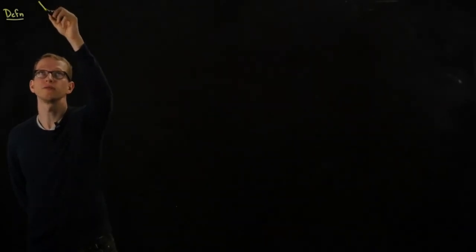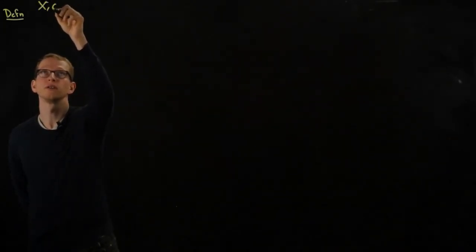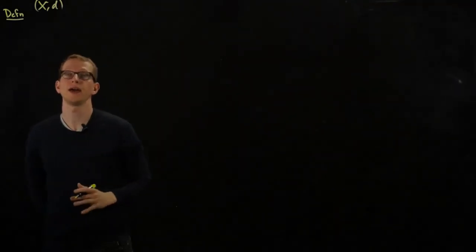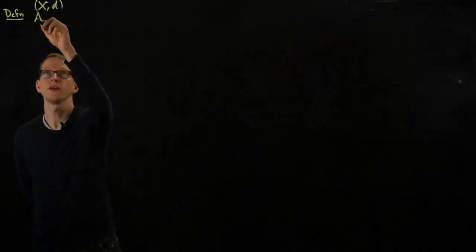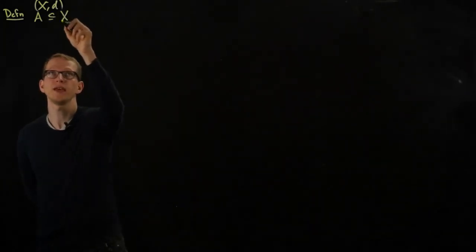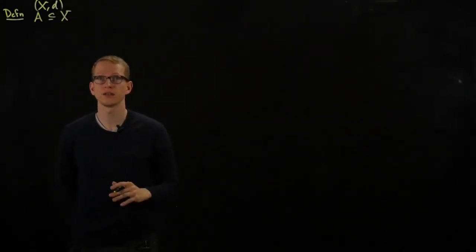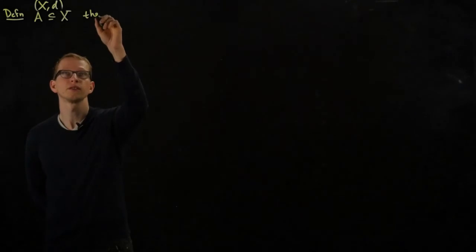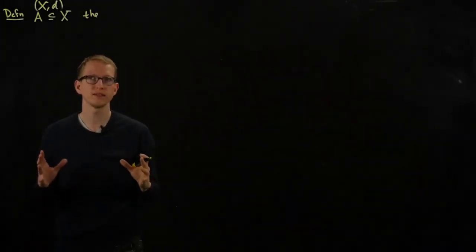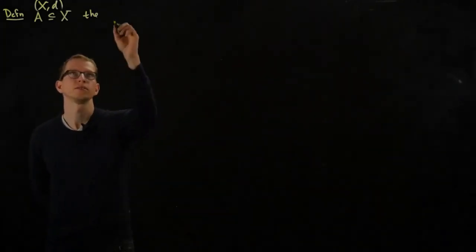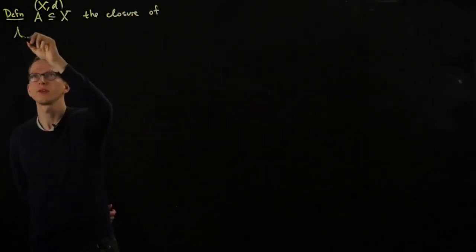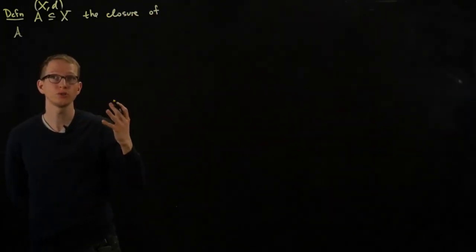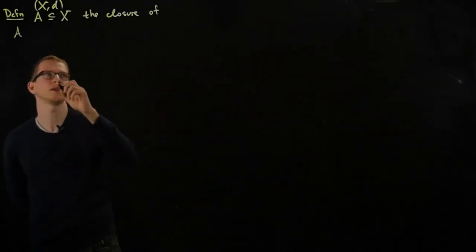So again, for all of this video, x,d is a metric space. If I have a subset A of x, I can look at the set of all closed subsets containing A. I can use that to define the closure of A, which is the smallest closed set containing A.